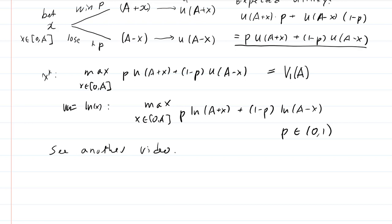Solving this problem depends on P. If P is bigger than or equal to 1 half, we're going to have x star is equal to 2P minus 1. If P is less than 1 half, then x star is simply going to be 0.